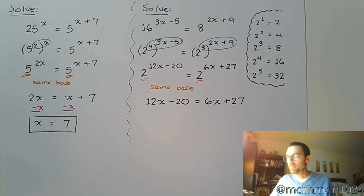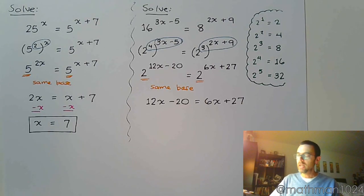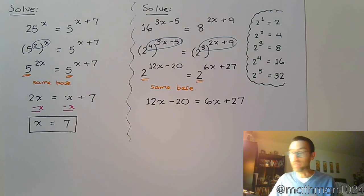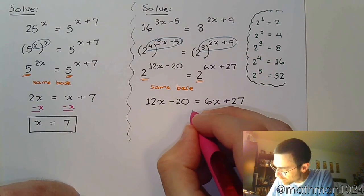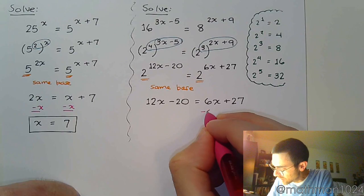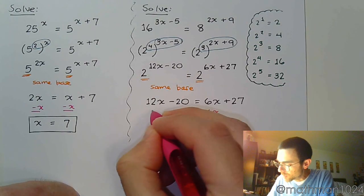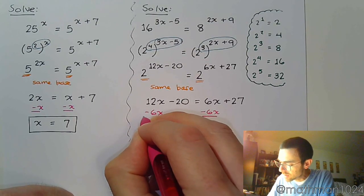Now that we have this equation, it becomes a simple matter of can you solve this linear equation, and I hope at this point the answer is yes. I'm going to move my variables all to the same side - the easiest way is to subtract 6x on both sides.